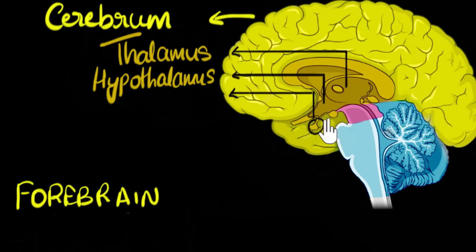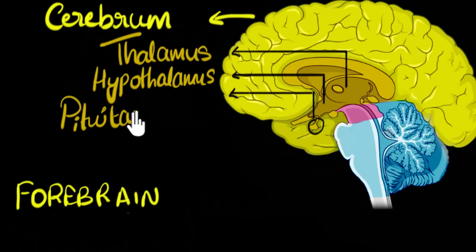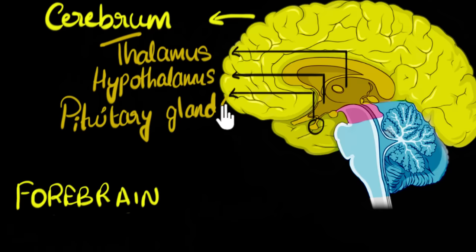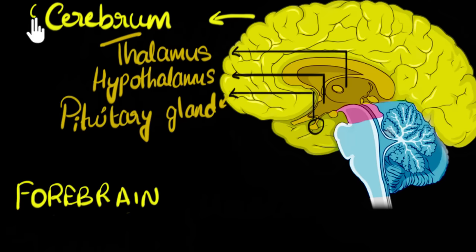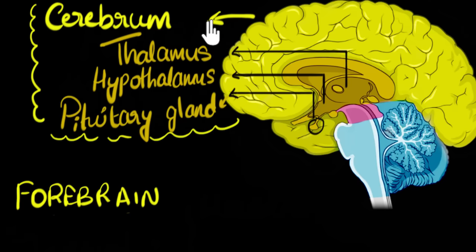This last part — this small thing you can see over here — is called the pituitary gland. So these are the four parts of our forebrain: the cerebrum, thalamus, hypothalamus, and pituitary gland. These are the only parts we'll concentrate on.